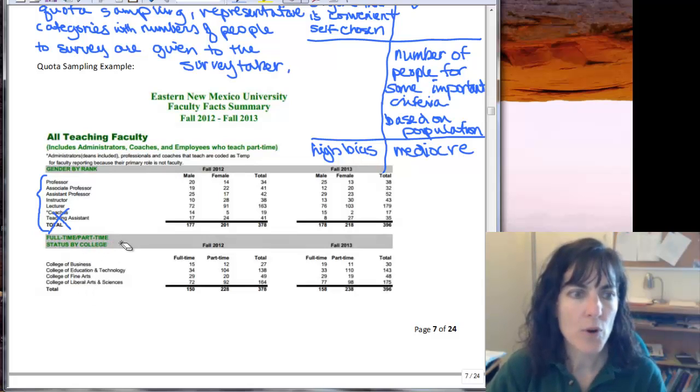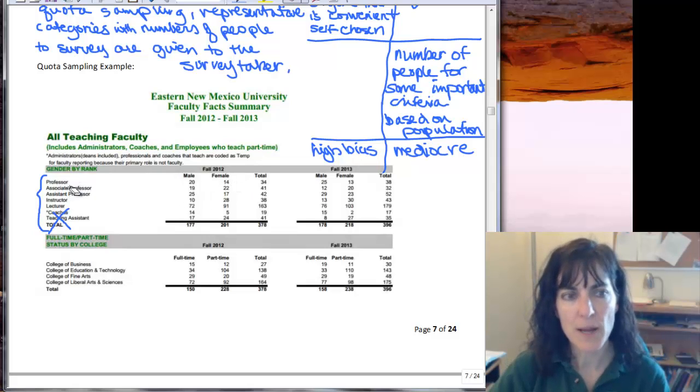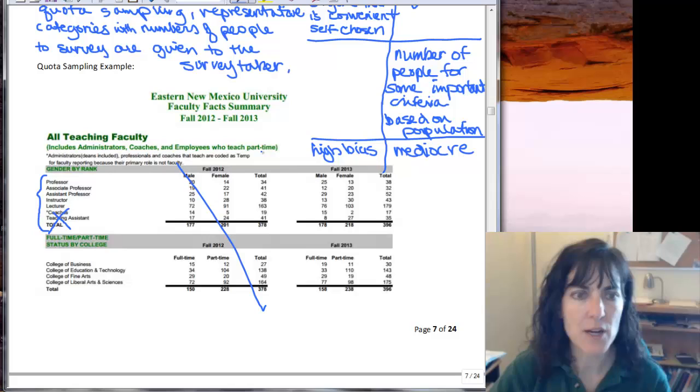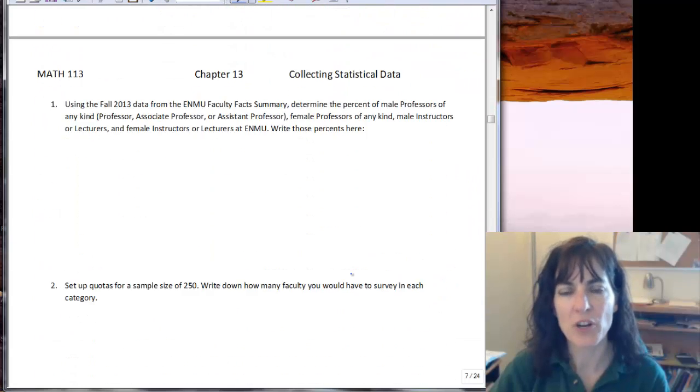We have the same thing for all faculty whether they're full-time or part-time and by the college that they work in. So what I'm going to do is narrow this down for our quota. We're not going to consider fall 2012, we're just going to look at the 2013 data since this was just last fall and I am going to just make quotas based on male-female. I'm not going to worry about the college and the full or part-time.